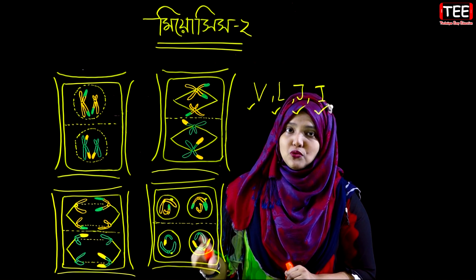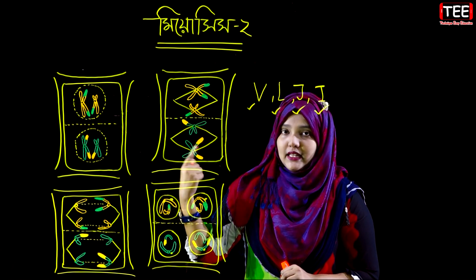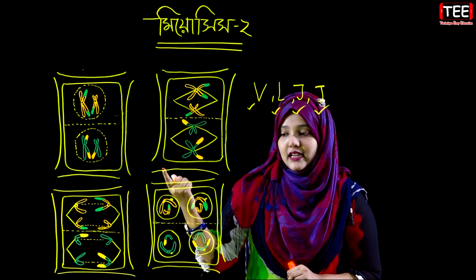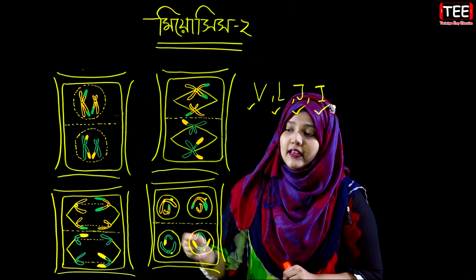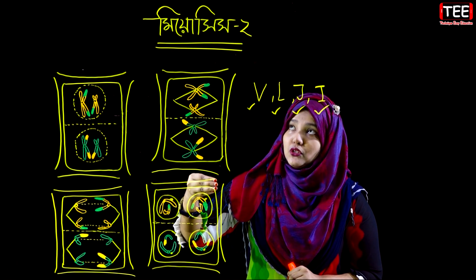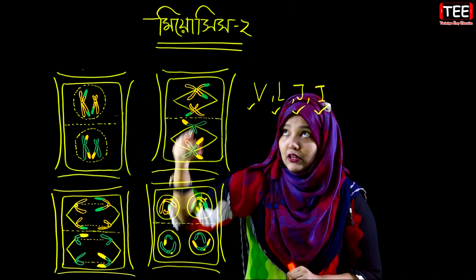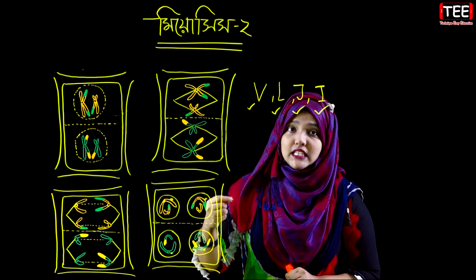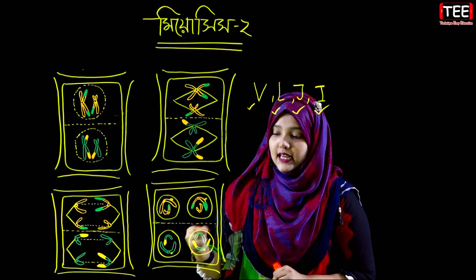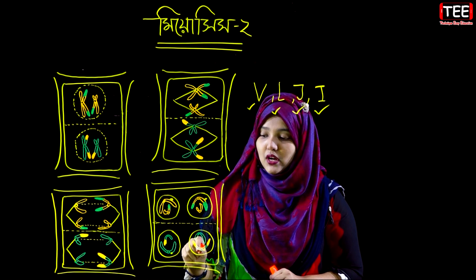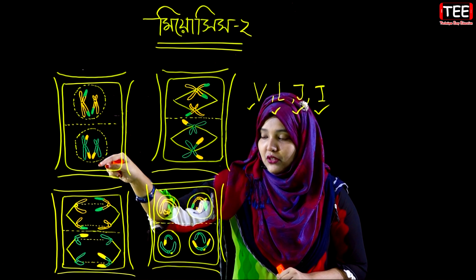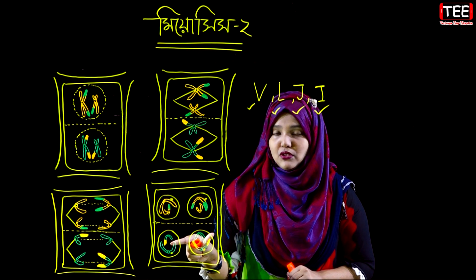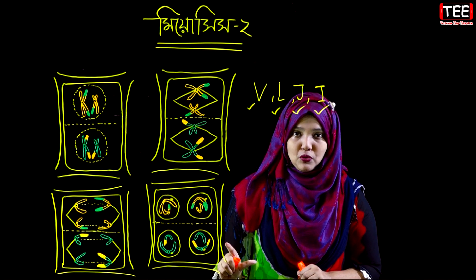Cytokinesis II is connected to the nucleus, and we see cytokinesis here. Cytokinesis 1 is connected to cytokinesis 2, and those two divisions result in 4 daughter cells from 2 examples.